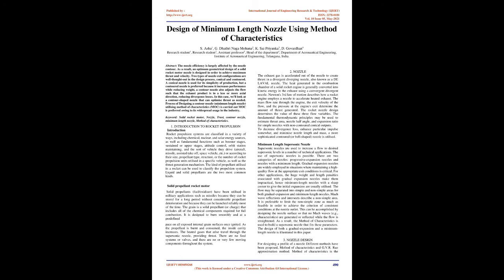As a result, an optimum geometrical design of a solid rocket motor nozzle is designed in order to achieve maximum thrust and velocity. Two types of nozzle exit configurations are well thought out in the design process: conical and contoured.